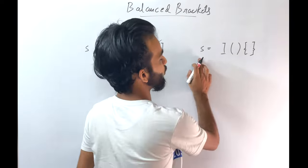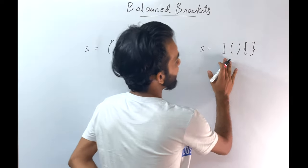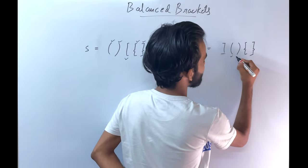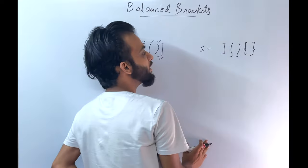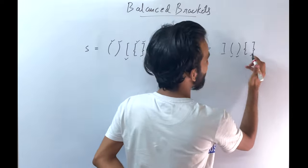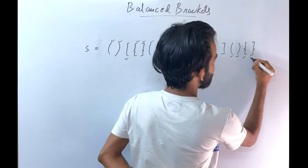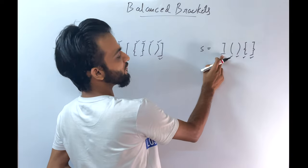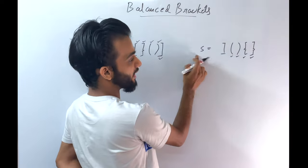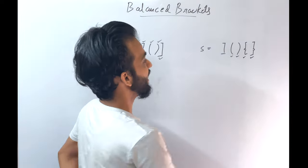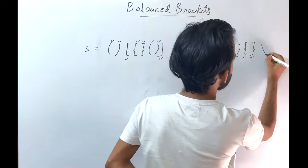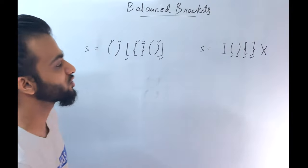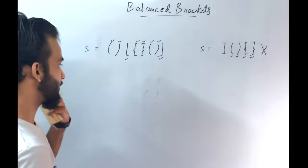Now let's check this out. I can see this opening has this closing. I can see this opening has this closing. But I cannot see for this closing an opening bracket. Hence, I will say this is not a balanced bracket.